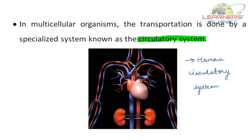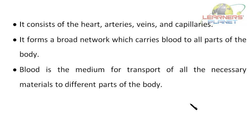Unlike unicellular animals which do not have any specialized transport system, humans and multicellular organisms have a specialized circulatory system. It consists of the heart, arteries, veins, and capillaries, and forms a broad network that carries blood to all parts of the body. Blood is the medium for transport of all necessary materials to different parts of the body. The importance of transport in animals includes: exchange of materials with the external environment, distribution of materials around the body, removal of waste, and the diffusion process.